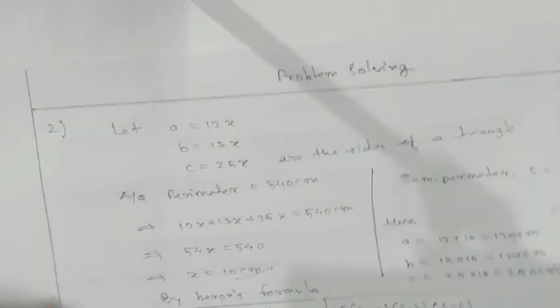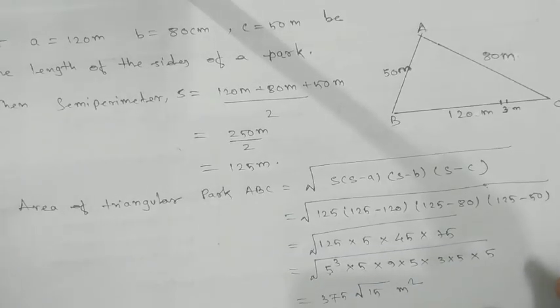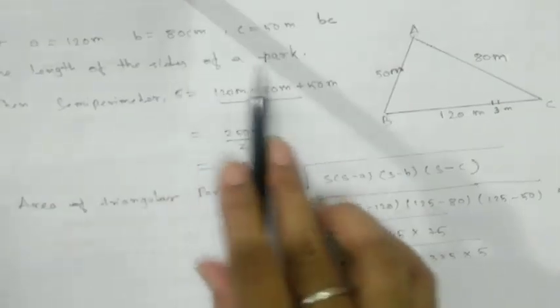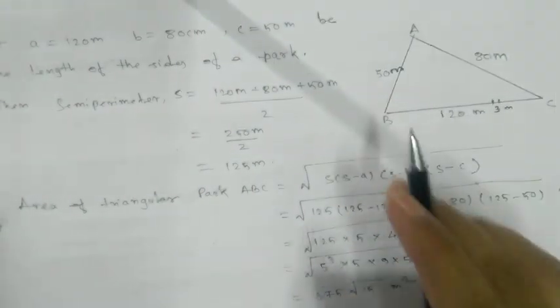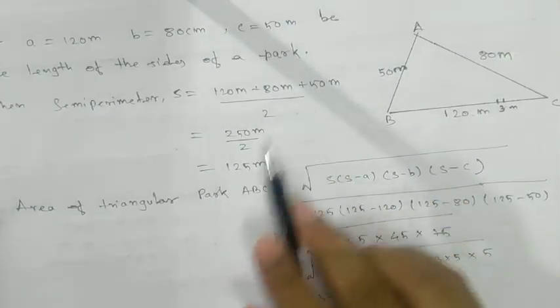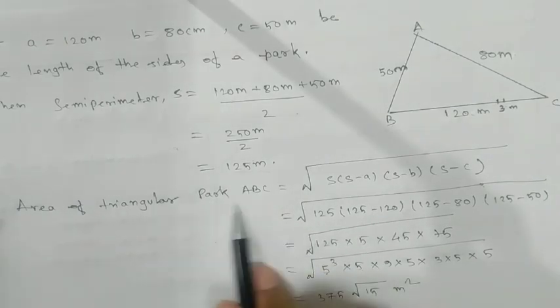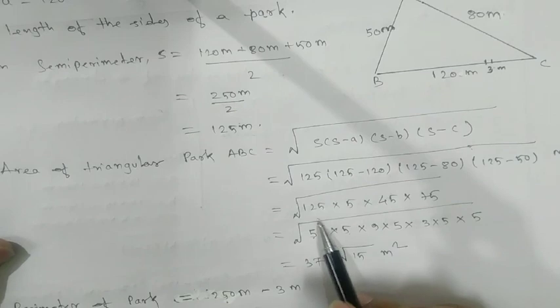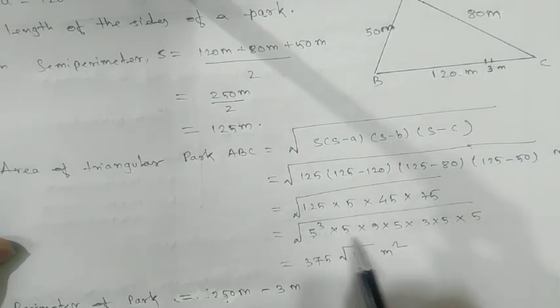Now we will go for third one. Here we have. So, let A, B, C be the length of the side of a park. Then semi-perimeter we can find by using your same perimeter formula. After getting area of triangle by Heron's formula, substitute here. Same concept we have applied here. See, you can see this one. By solving, we are getting this one.